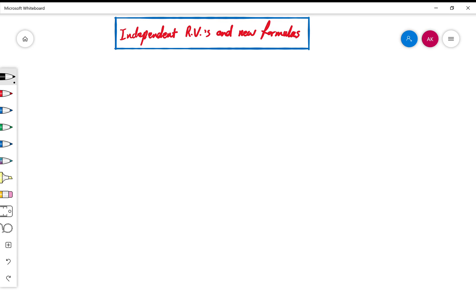Hi, in this video I will teach you new formulas for expected value and variance of combination of two independent random variables. So what you need to remember from section 3.3 is that for any two random variables X and Y and any two constants a, b, we have the following formulas.